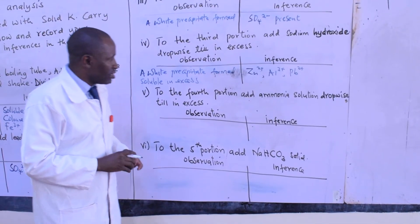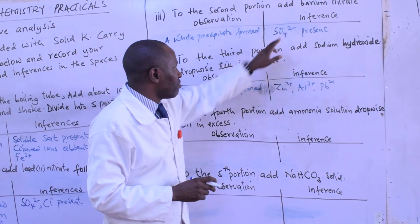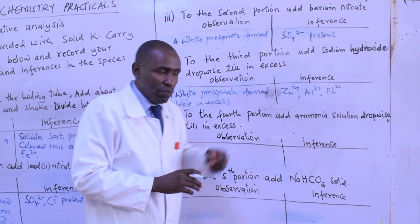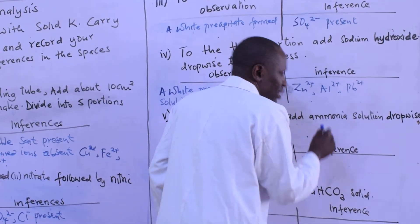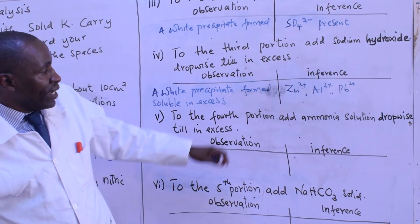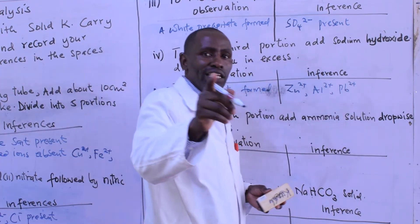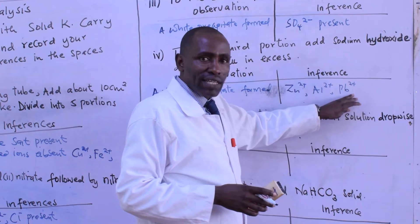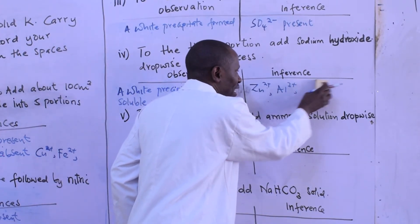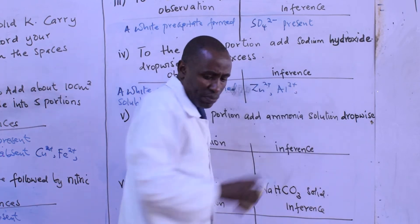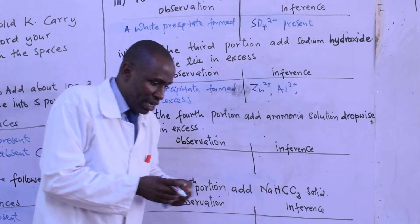We have already seen that we have a soluble sulfate. Now, thinking about the sulfates of zinc, aluminum, and lead — we must eliminate lead here, because lead sulfate is insoluble. The fact that our solid is soluble means lead ions cannot be present. Therefore, what remains is either zinc ions or aluminum ions.